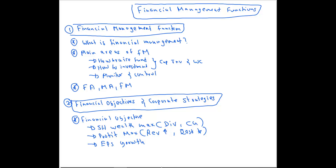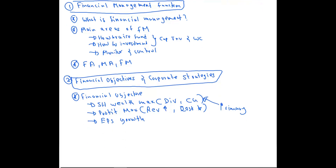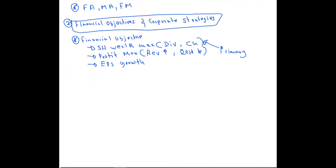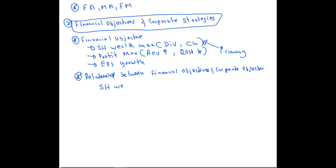Out of these three financial objectives, if you ask what is the primary financial objective, normally we say it is shareholder wealth maximization. Next, you should know the relationship between financial objectives and corporate objectives. There are certain financial objectives — shareholder wealth maximization, profit maximization, and EPS growth — and these are also certain corporate objectives.